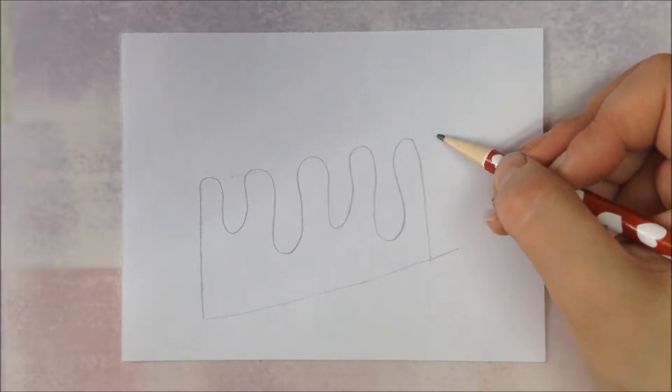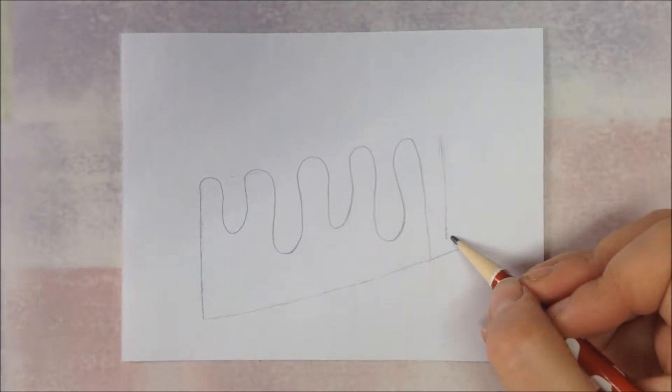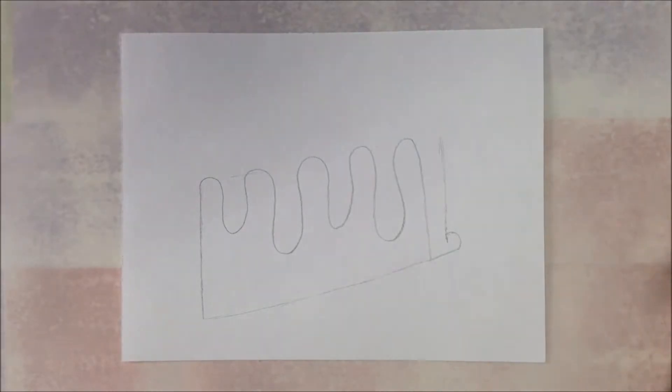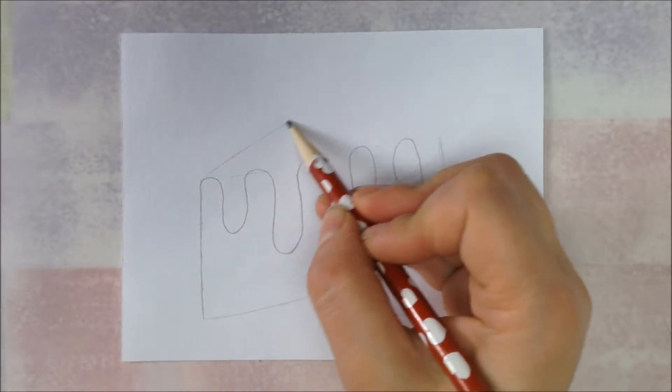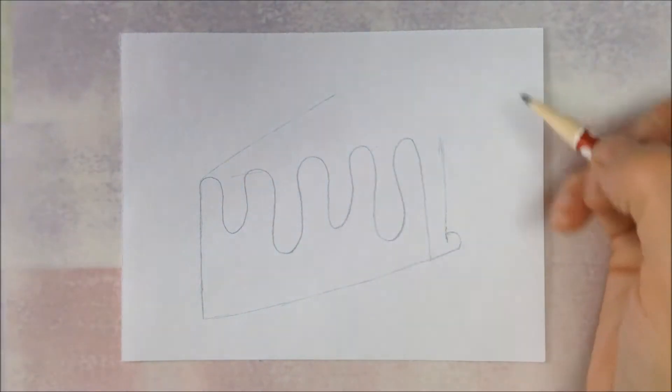Then we're going to draw a straight line down. So this is going to show where the icing is on the back of the cake, what would be like the outside before you cut it. Now we're going to draw a different diagonal line. This is going to show how wide the top of our cake is.